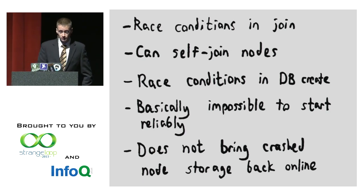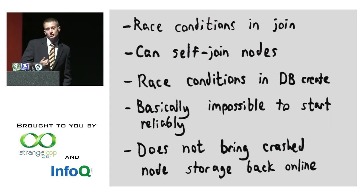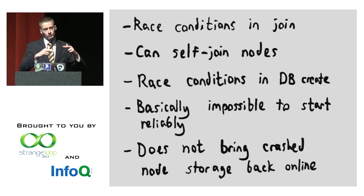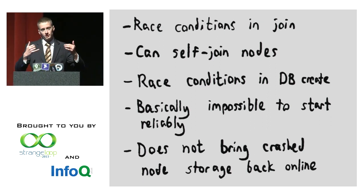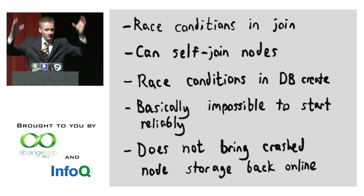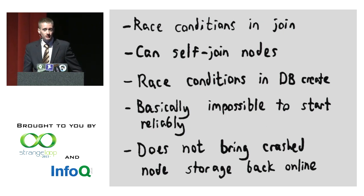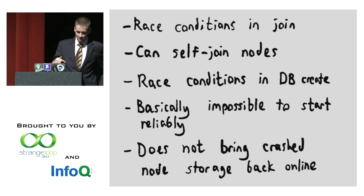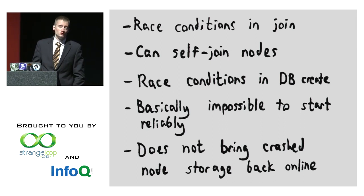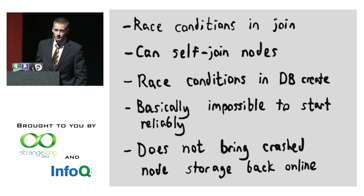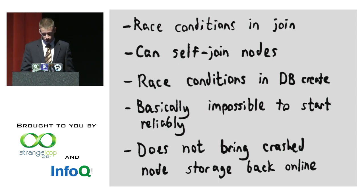What happens in practice is you can try to drop a table, but you can't because the table's identity sequence doesn't exist. So you try to create the identity sequence, but you can't because the non-existent identity sequence already exists. So you nuke the database from scratch and start over. This is easy because NuoDB does not bring its crash storage back online when you restart a node — it starts up with a fresh copy, no data. This is apparently desired behavior for their customers. There are also race conditions in join — if you join nodes in the wrong order, you get a quiet split-brain. You can even join a node to itself.